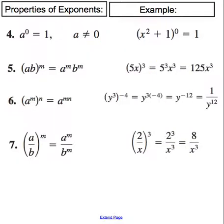Alright, moving on to example four, property four. Anything raised to the zero power is one. So here's an example. You have x squared plus one raised to the zero power. That whole thing will become a one.